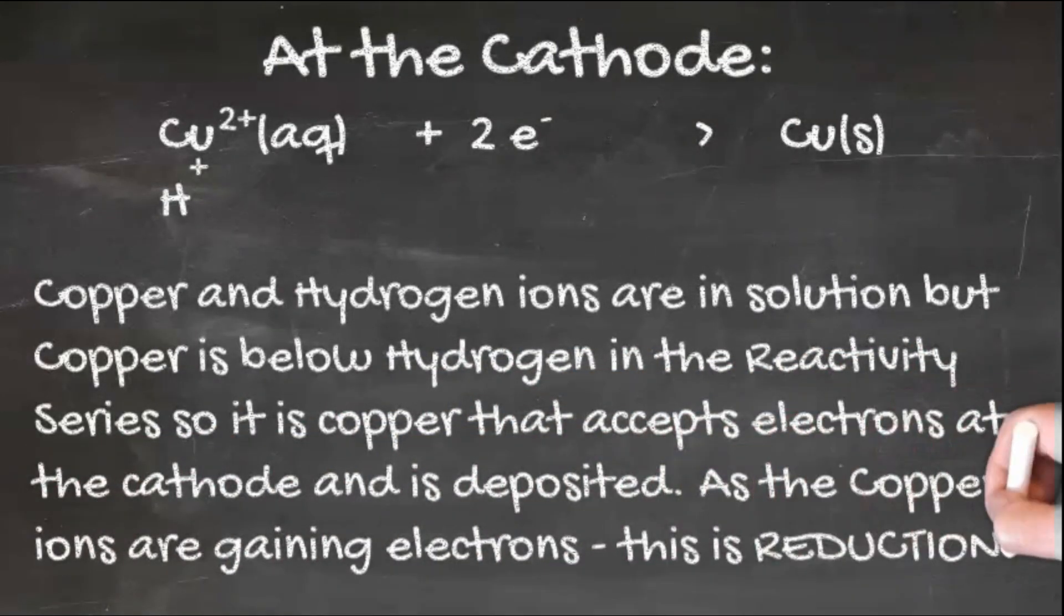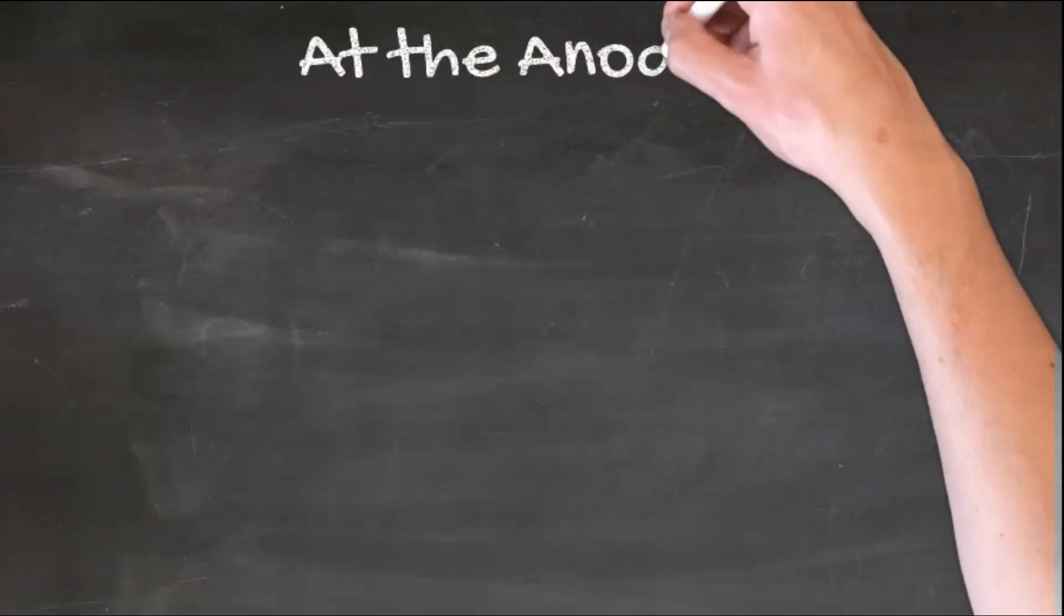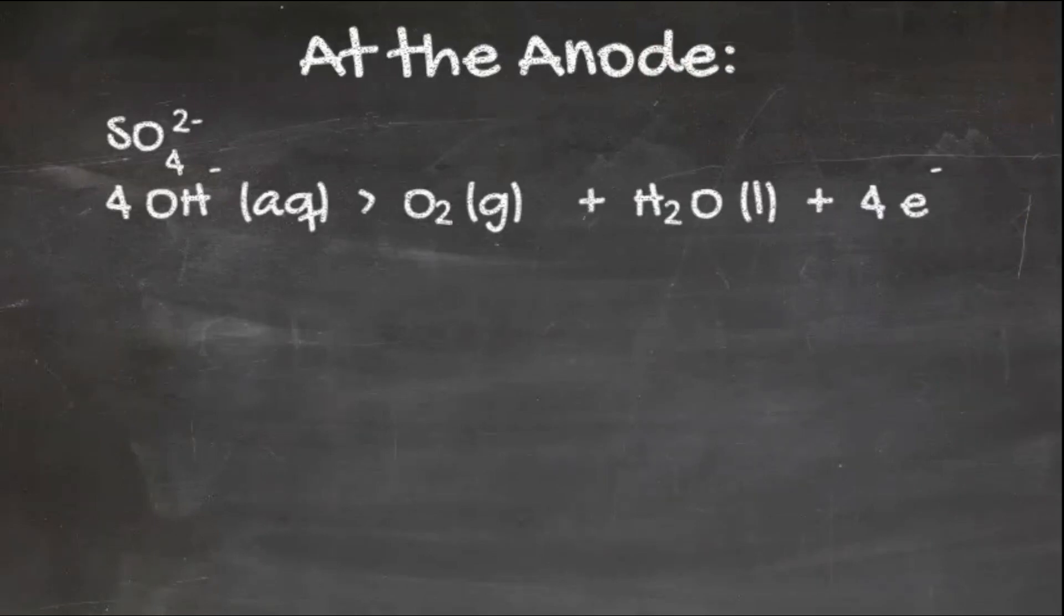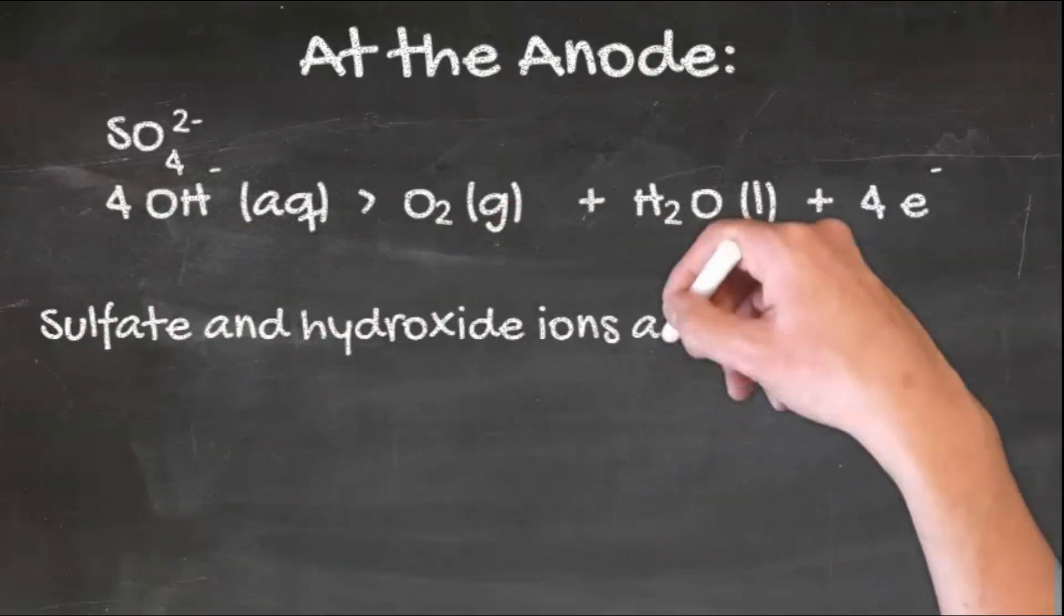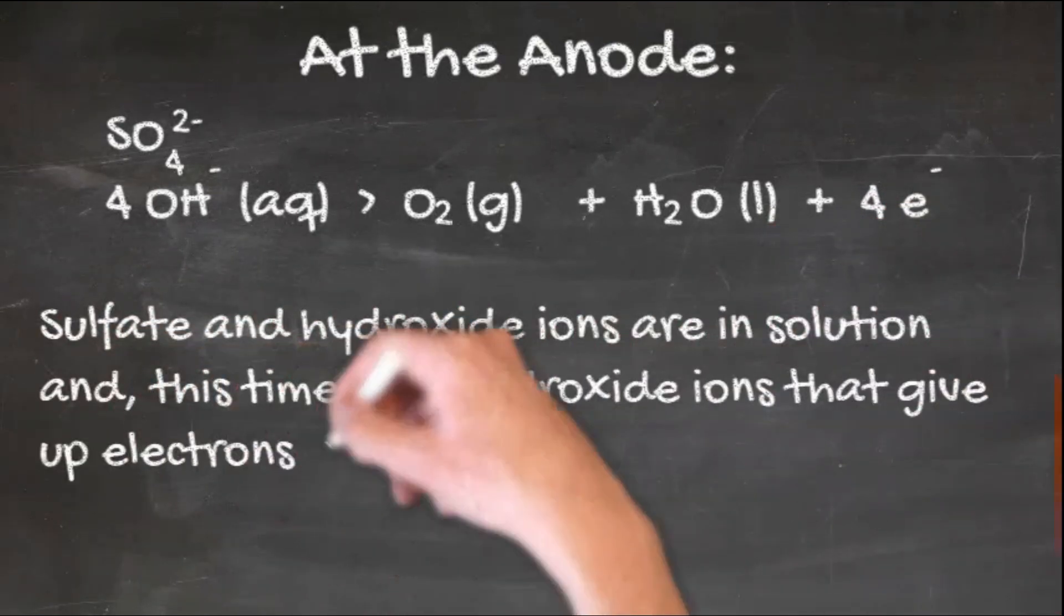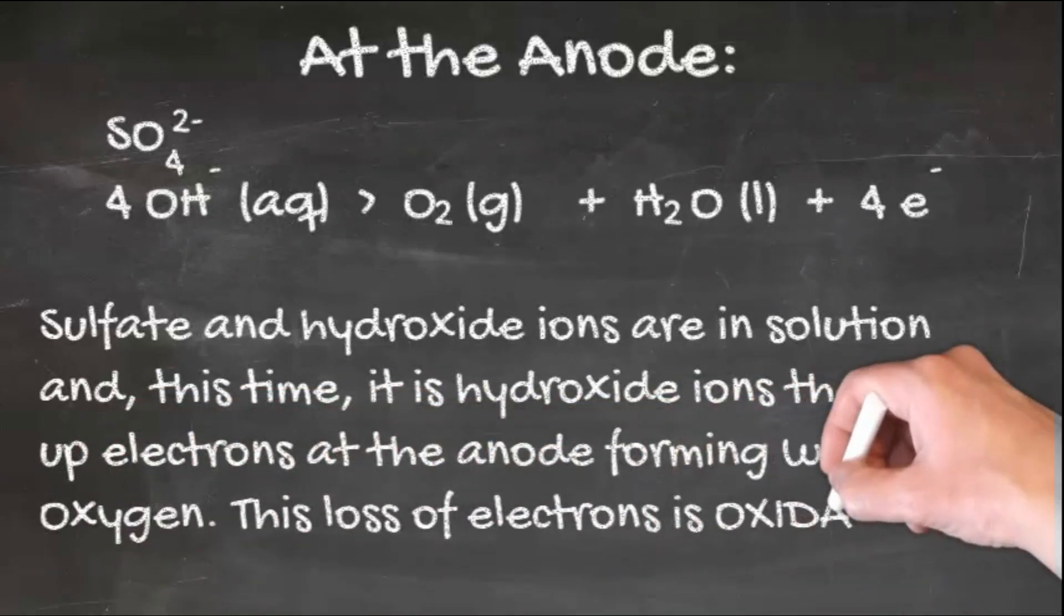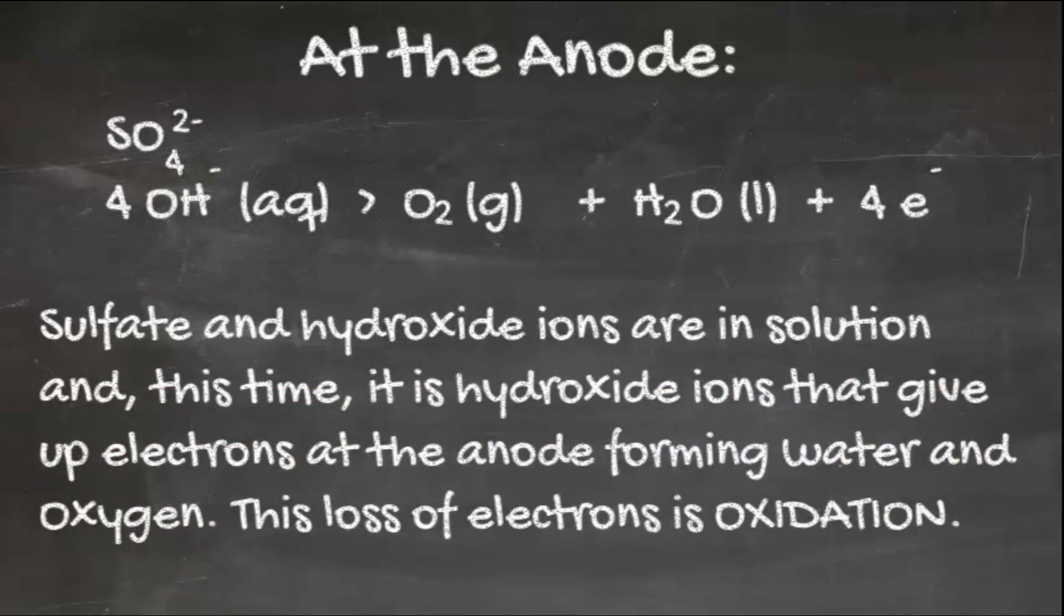As the copper ions are gaining electrons, this is called reduction. At the positive anode, sulfate and hydroxide ions are in solution, and this time it's the hydroxide ions that give up electrons at the anode, forming water and oxygen. This loss of electrons is called oxidation.